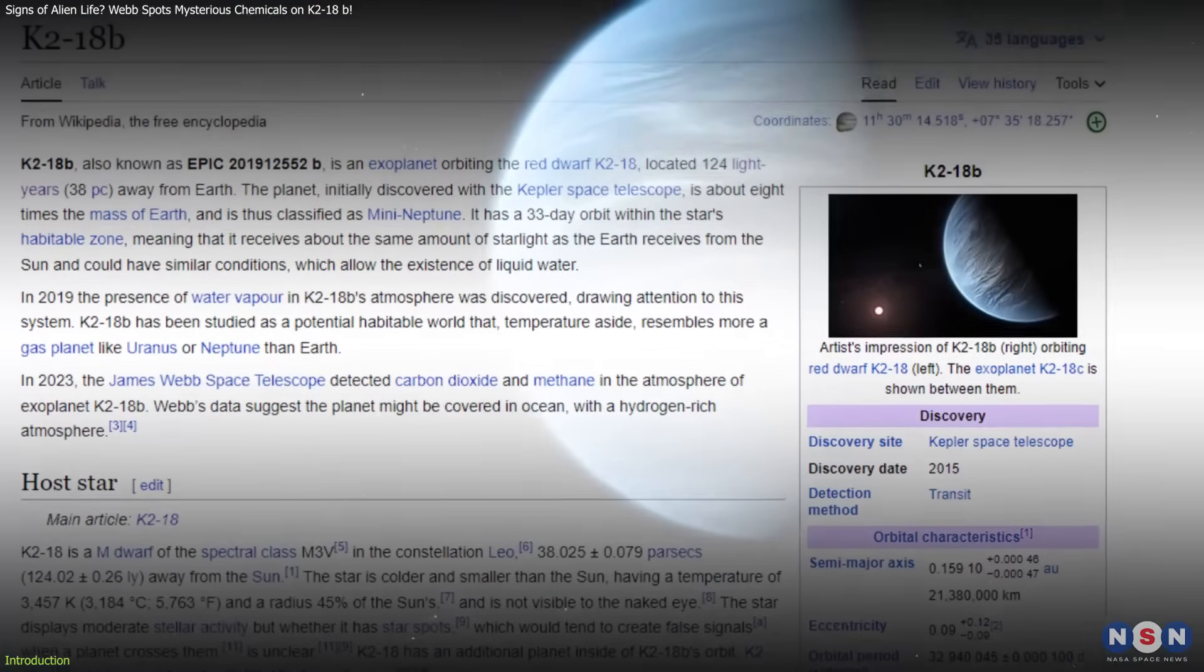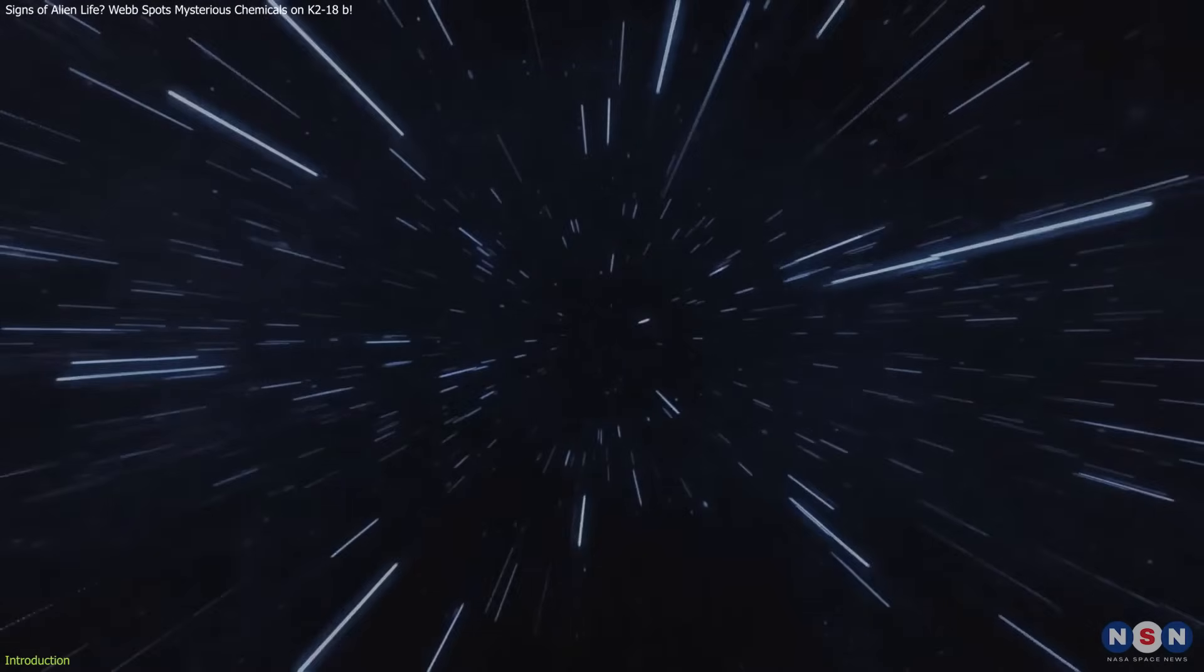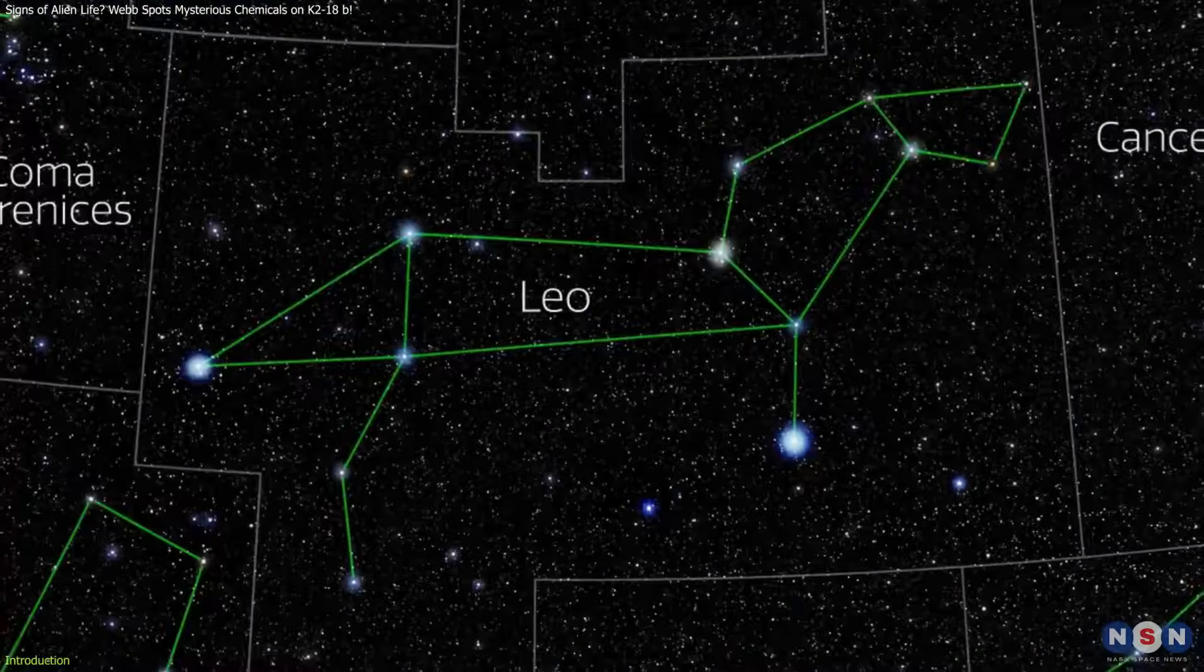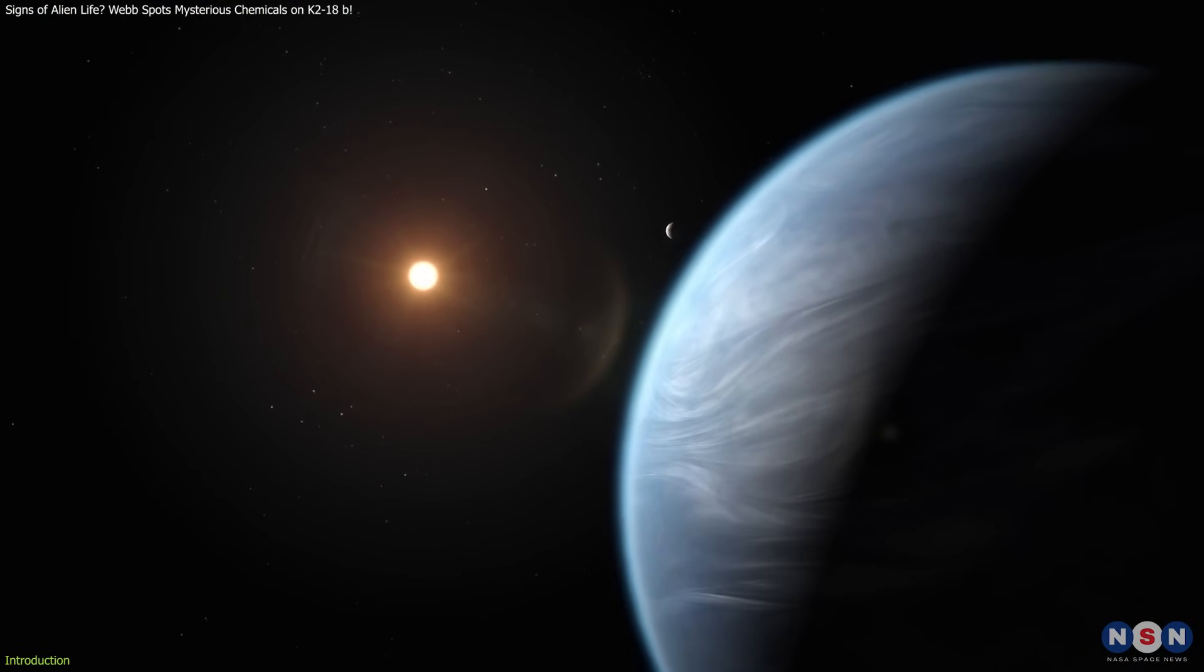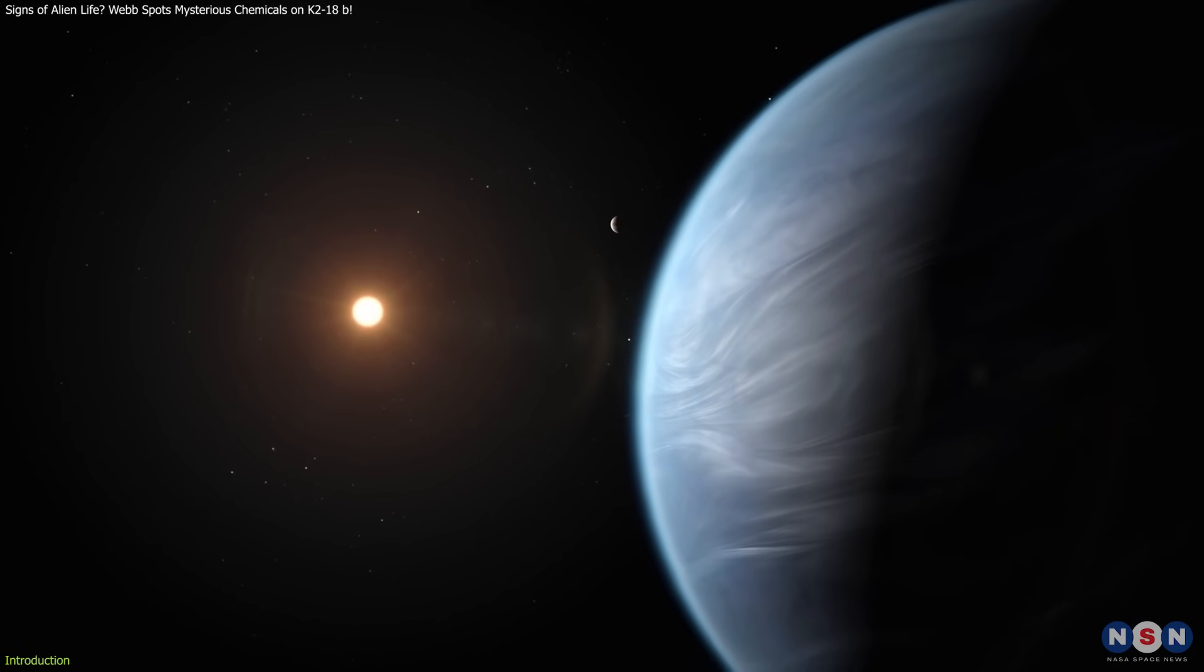The planet K218b, located 124 light-years away in the constellation Leo, is now at the heart of what could become one of the most transformative moments in space exploration.